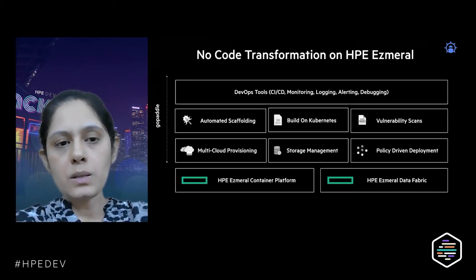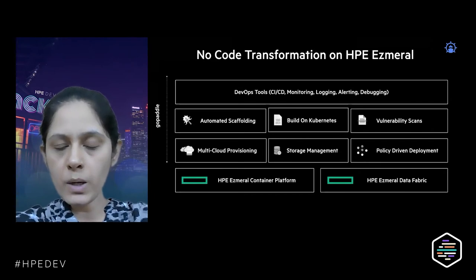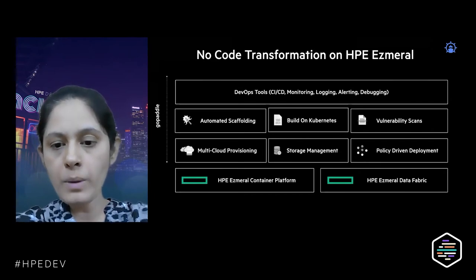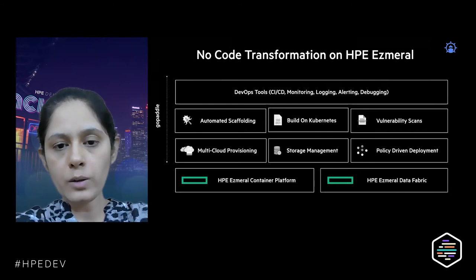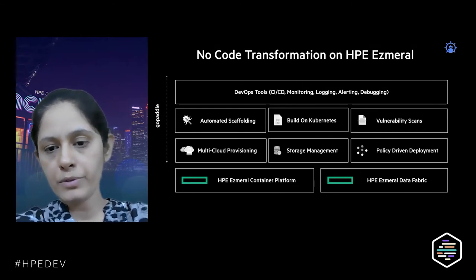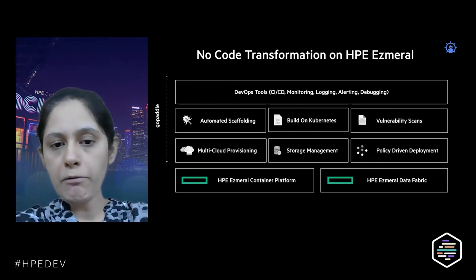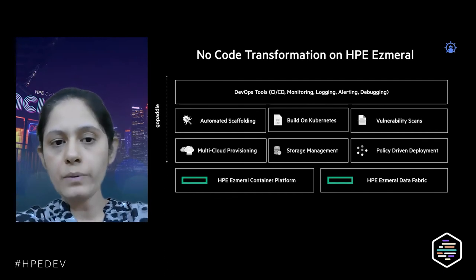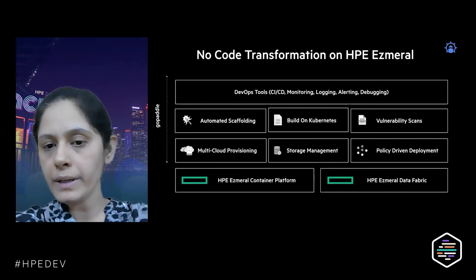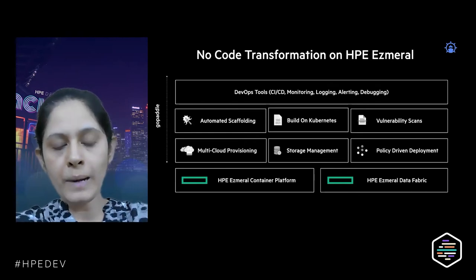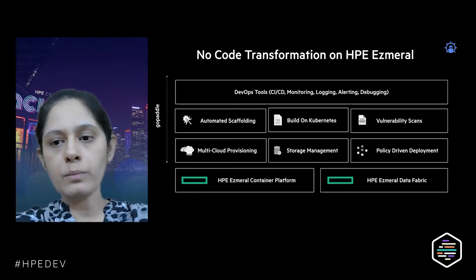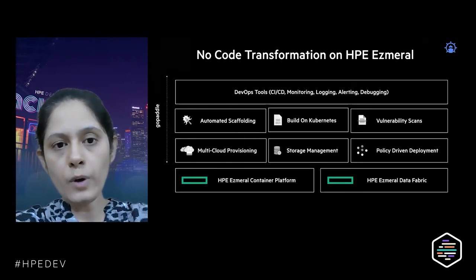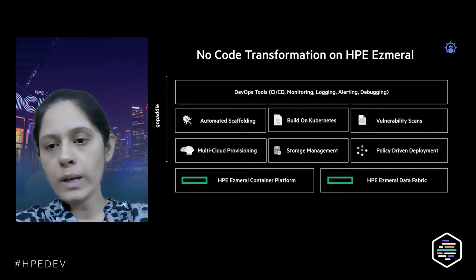This is how our no-code transformation on HP Ezmeral looks. We have the HP Ezmeral platform and data fabric acting as the infrastructure layer. On top of it we run GoPaddle, which handles multi-cloud provisioning, storage management, scaffolding, building, and all security elements. We also have DevOps tools like CI/CD, monitoring, and logging. Combined, HP Ezmeral platform and GoPaddle provide a complete end-to-end solution for transforming cloud-native environments, workloads, and DevOps capabilities through a single solution.